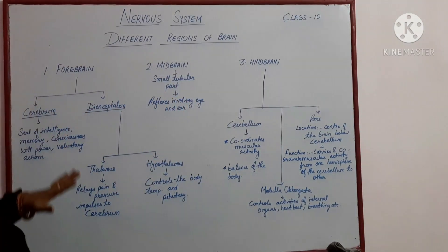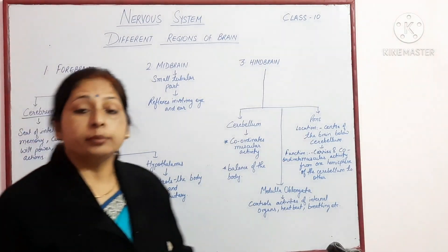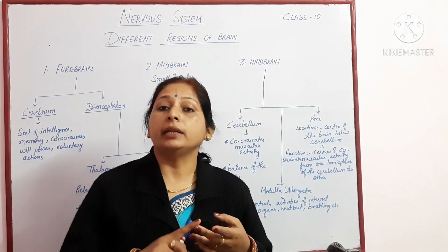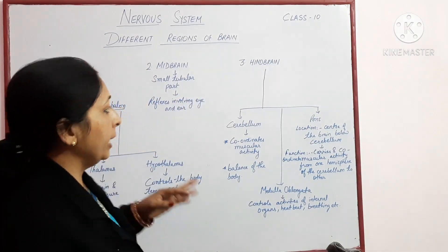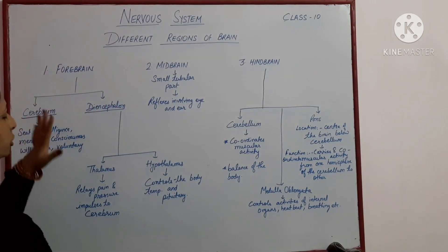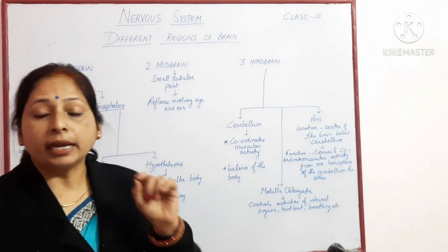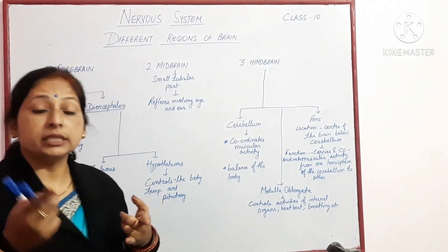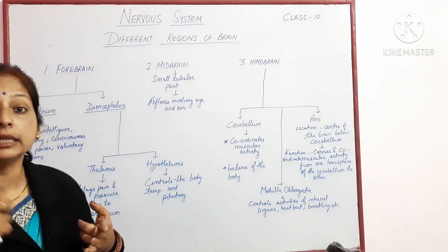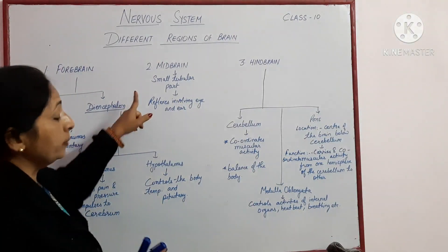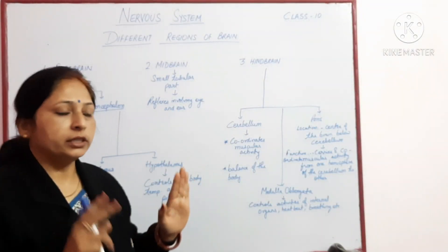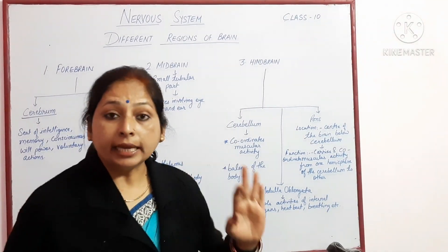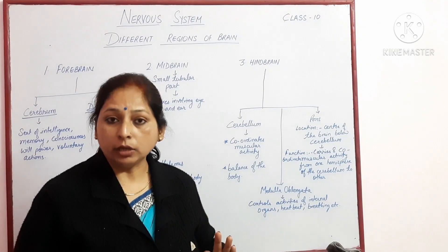Let's have a quick revision. Brain consists of three regions: forebrain, midbrain, and hindbrain. Forebrain is divided into cerebrum and diencephalon. Diencephalon has two regions: thalamus and hypothalamus. Midbrain has no further divisions. Hindbrain is divided into three: cerebellum, pons, and medulla oblongata.